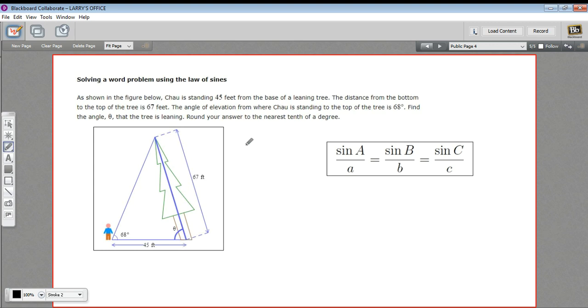The distance from the bottom to the top of the tree is 67 feet, so this side of the triangle is 67. And the angle of elevation from where Chow is standing to the top of the tree is 68 degrees, so this angle here is 68. Find the angle theta here that the tree is leaning and round to the nearest tenth.